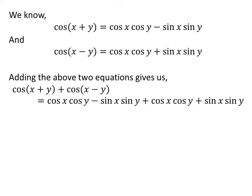Adding both equations gives us cos(x + y) plus cos(x - y) equals cos x cos y minus sin x sin y plus cos x cos y plus sin x sin y.